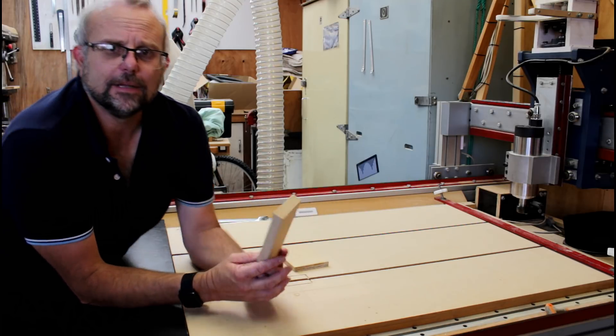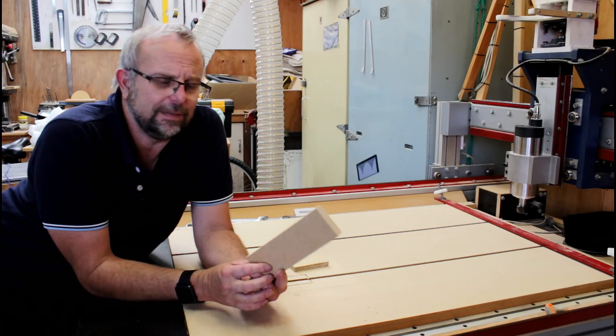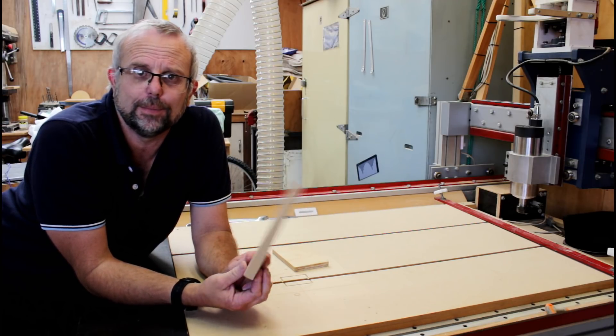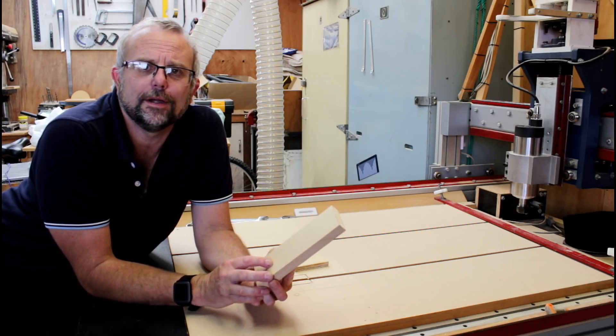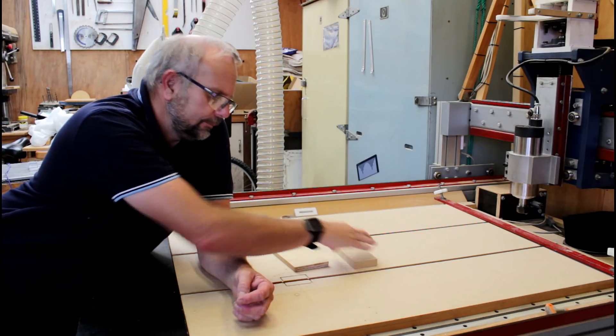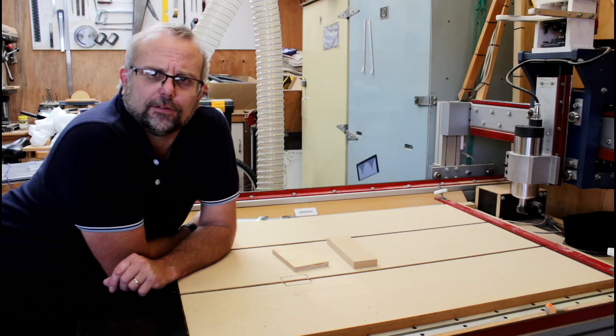The same applies to MDF. It also is a nominal thickness, and it's roughly 18mm thick. Could be more, could be less. So depending on which it is, I'm either going to not cut all the way through it, or I'm going to cut into the top of my spoil board.